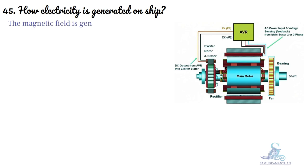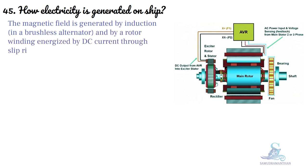The magnetic field is generated by induction in a brushless alternator, or by a rotor winding energized by DC current through slip rings and brushes.